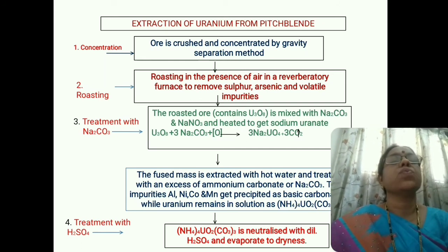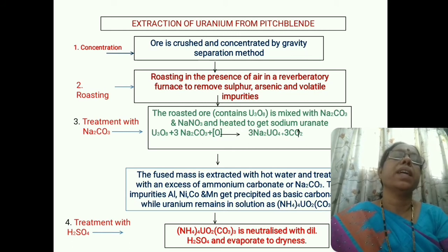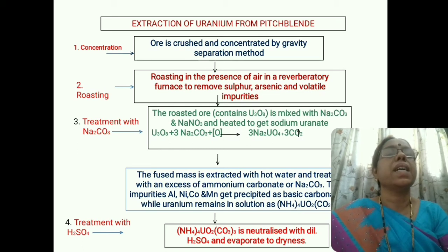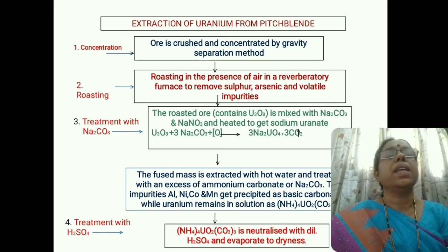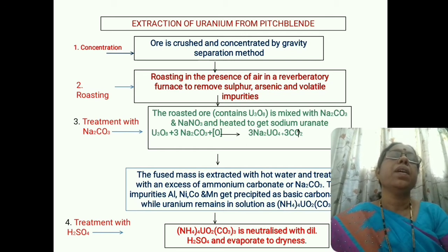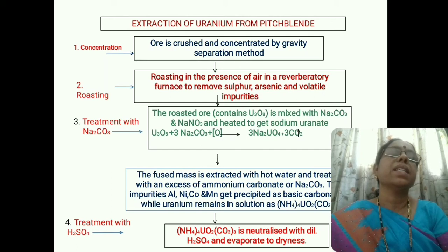Sodium uranate is formed by treating the roasted ore with sodium carbonate and sodium nitrate. The fused mass — that is, the sodium uranate — is extracted with hot water and treated with an excess of ammonium carbonate or sodium carbonate to remove impurities like aluminum, nickel, cobalt, and manganese. When ammonium carbonate or sodium carbonate is added, these impurities are precipitated as basic carbonates, and the uranium remains in solution as ammonium uranyl carbonate.